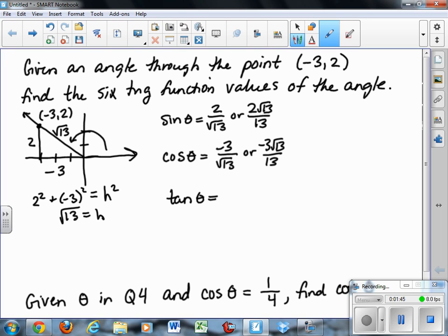Tangent of theta is 2 over negative 3, opposite over adjacent. Now the reciprocals: cosecant of theta, look back at the original one and just flip that over. Cosecant of theta is √13 over 2. That's the reciprocal of sine. Secant, reciprocal of cosine, is -√13 over 3. It doesn't really matter that I put the negative sign in the numerator or the denominator. The fraction is still negative. That's the main thing. And cotangent of theta, -3/2 instead of -2/3. So that's all there is to that problem.